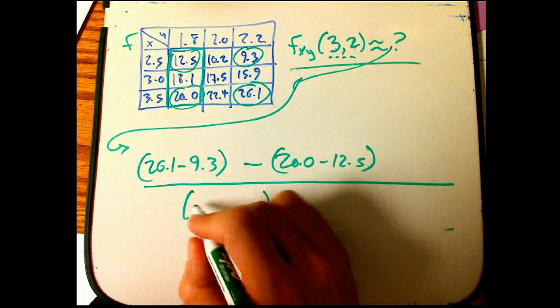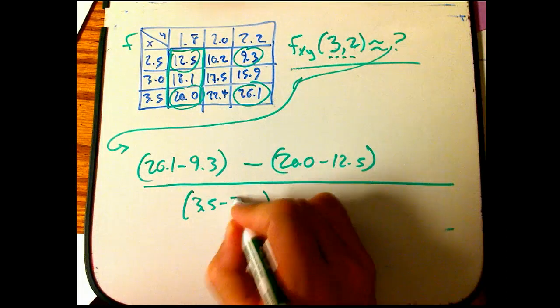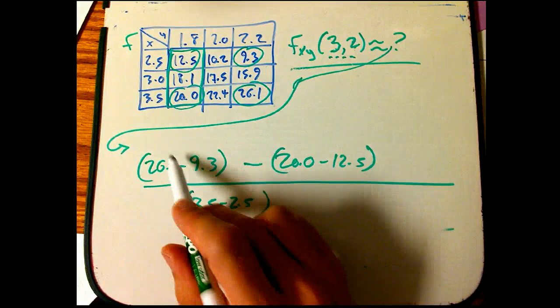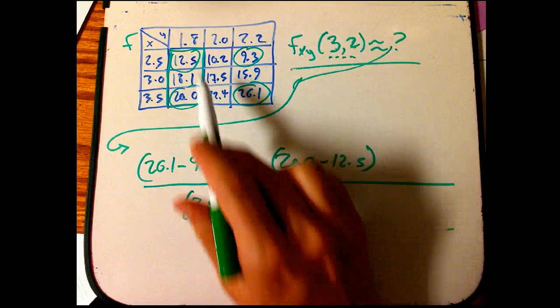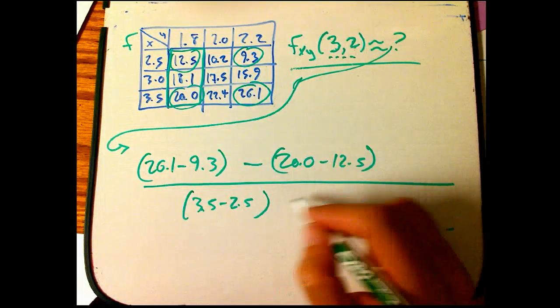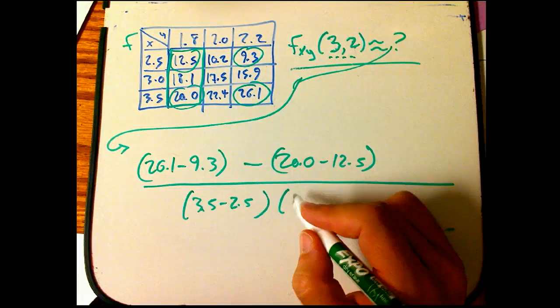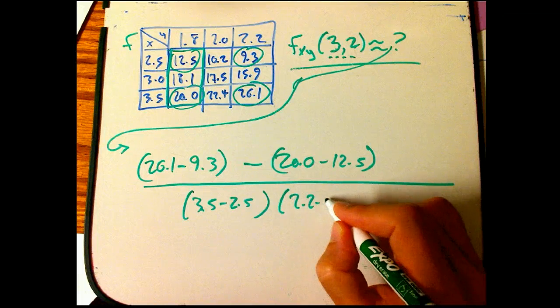That was the 3.5 minus 2.5. So this over this was the derivative at 2.2. This over this was the derivative at 1.8. And then I took the difference of those guys, and then I did 2.2 minus 1.8.